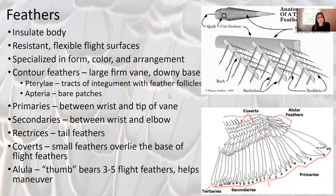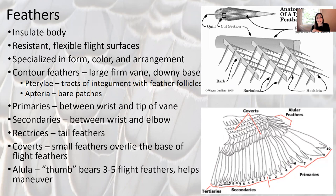Feathers have multiple functions in birds. First of all, to insulate the body, but also they're resistant and flexible — so they're strong but also flexible, which is really important for lift in flight. Across different birds, there are different specializations in feathers in form, color, and arrangement to help birds best suit their environment. There are different types of feathers. Contour feathers are kind of what you think of as a feather — there's a large firm vane as the midline.